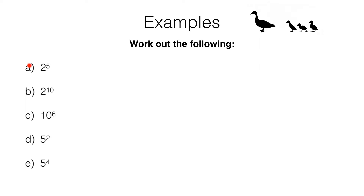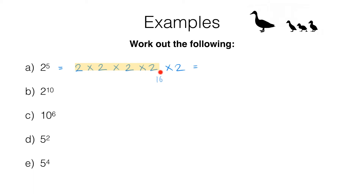In question A we need to work out 2 to the power of 5. That is 2 multiplied by 2, multiplied by 2, multiplied by 2, multiplied by 2. We can work that out in our heads: 2 times 2 is 4, multiplied by 2 gets us to 8, multiplied by 2 again gets us to 16, and multiplied by 2 again gets us to 32.